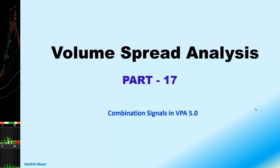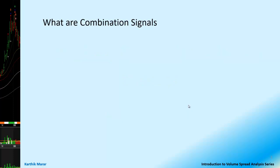Welcome to part 17 of the series on Volume Spread Analysis. We have been looking at the various combination signals. In the last session, we looked at two combination signals: one was the TC bar or the trend change bar, and the other was the sell condition exist or the SCE bar — both were Signs of Weakness or SOWs. In this session, we will be looking at the remaining combination signals. A combination signal is a signal based on a sequence of conditions and subsequent price action.